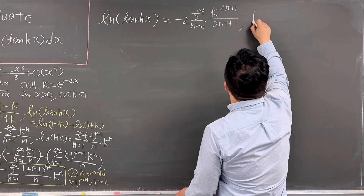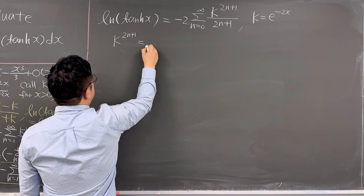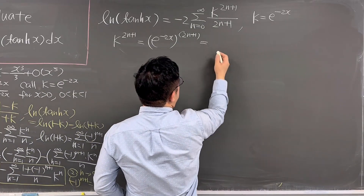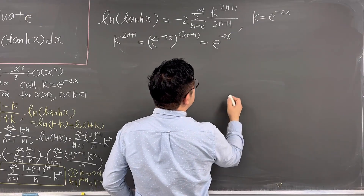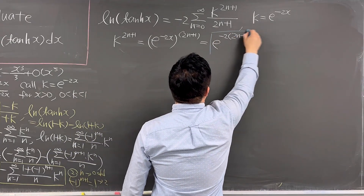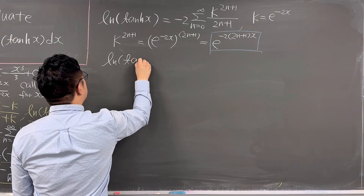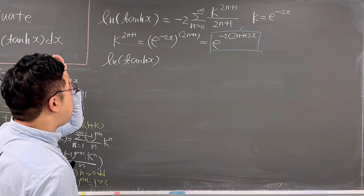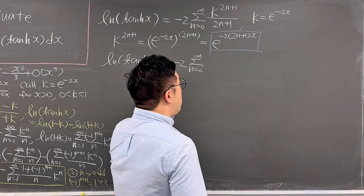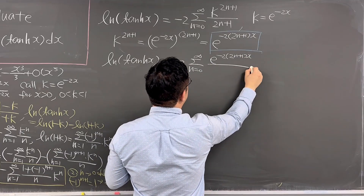Substituting back k as e to the power of negative 2x, we have k to the power of 2n plus 1 equals e to the power of negative 2x to the power of 2n plus 1, which we can rewrite as e to the power of negative 2 times 2n plus 1 times x. So ln(tanh x) equals negative 2 times summation from n equals 0 to infinity of e to the power of negative 2 times 2n plus 1 times x, all over 2n plus 1.